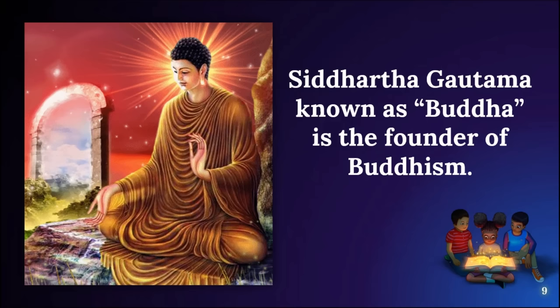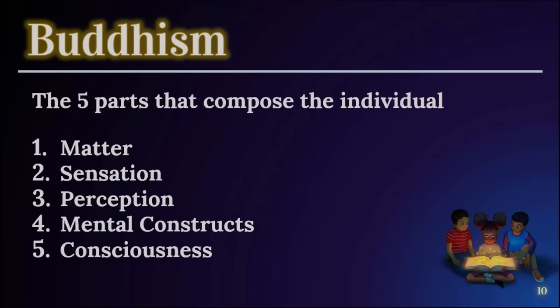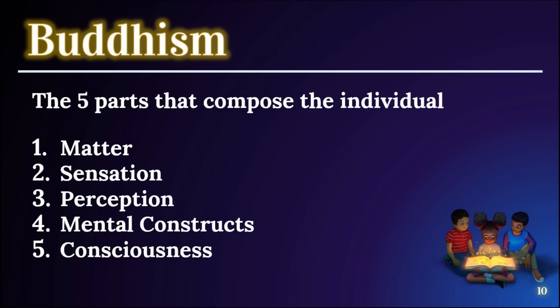According to Buddhist teaching, all people have a seed of enlightenment — meaning every person has the potential to become Buddha. However, that seed must be nurtured. Buddhism believes that 'man' is just a title for the summation of five parts that compose the individual: matter, sensation, perception, mental constructs, and consciousness. If these five parts are not complete, it does not make a man.